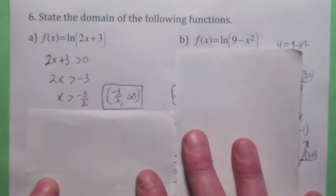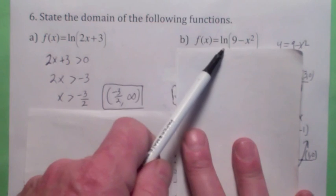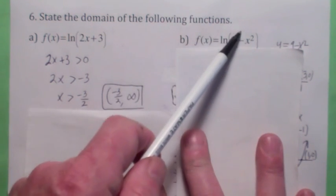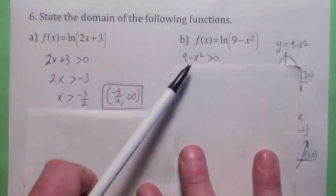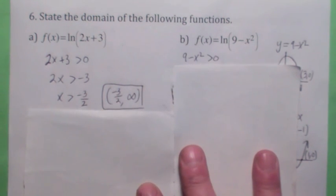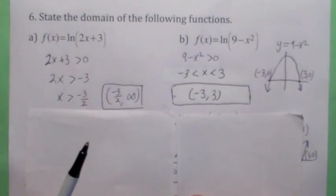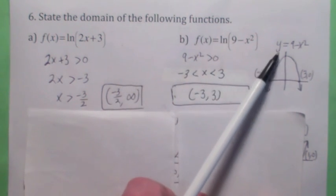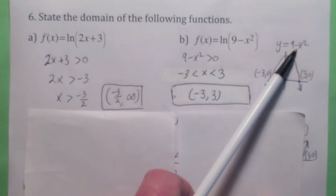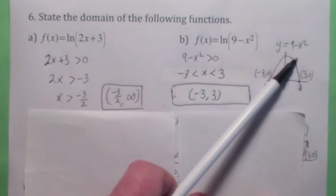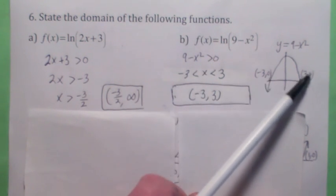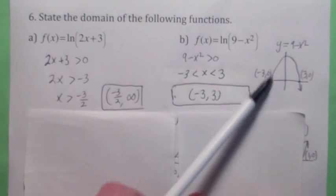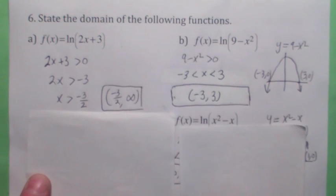This one's a little harder. What's the domain of f of x equals the natural logarithm of 9 minus x squared? The argument must be greater than 0. You could use a sign chart to solve the quadratic inequality, but it might be easier to solve it graphically. Look at the graph of y equals 9 minus x squared — it's a quadratic function that opens down. When is 9 minus x squared greater than 0? It's above the x-axis from negative 3 to 3. So that's the domain.